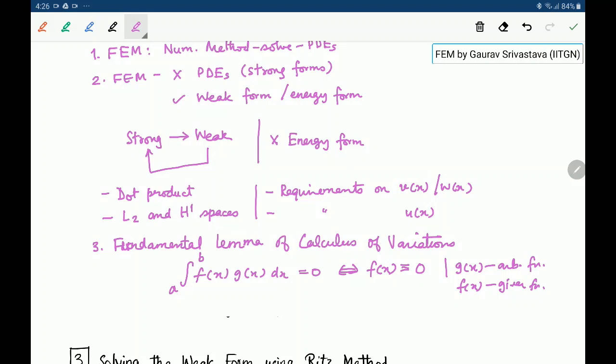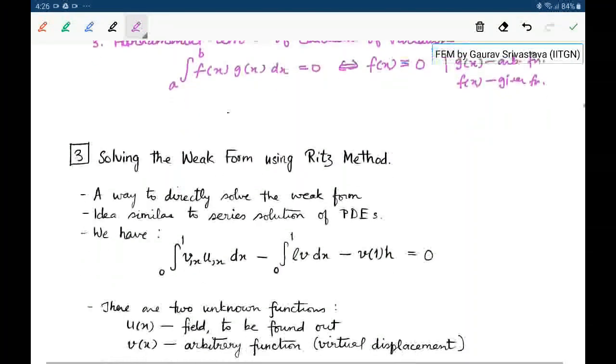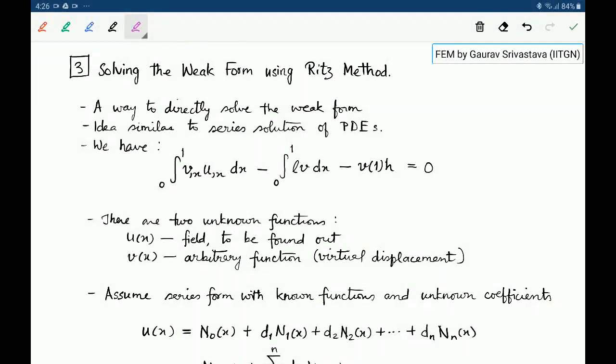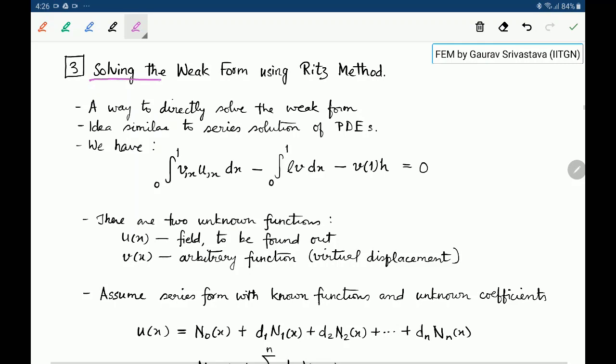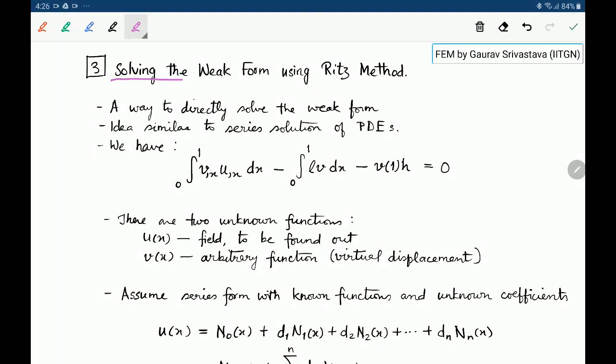Now with this background let us begin to see how we can directly solve the weak form. Directly solving the strong form you already know, we have learnt many methods of solving partial differential equations. Now let us learn a method which we call the Ritz method for directly solving the weak form.